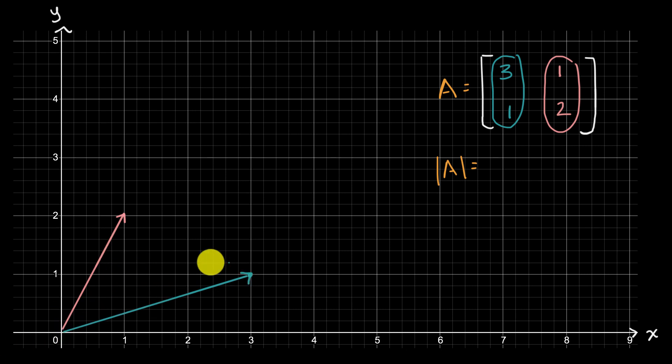Well, imagine taking this bottom vector and shifting it so its tail is at the head of this pink vector. So it would look like this, it would look something like that.